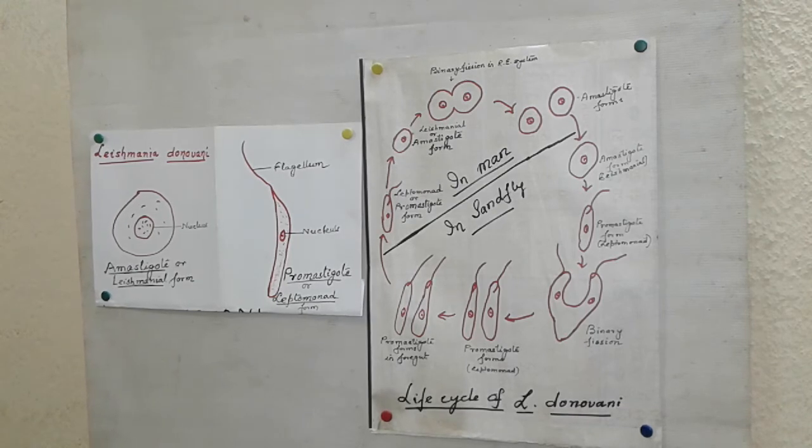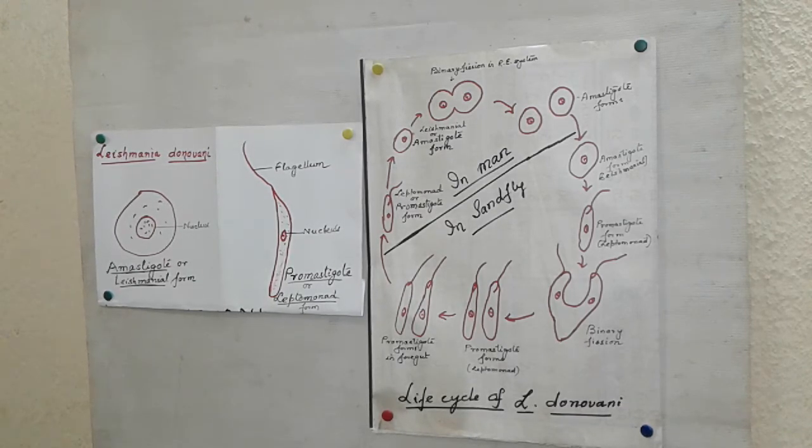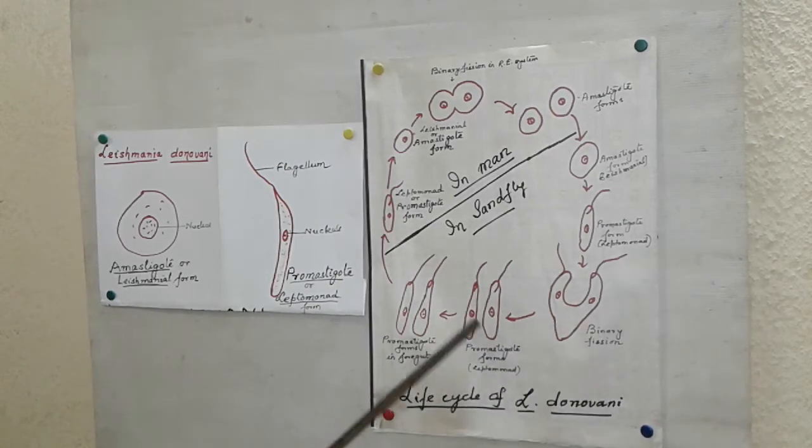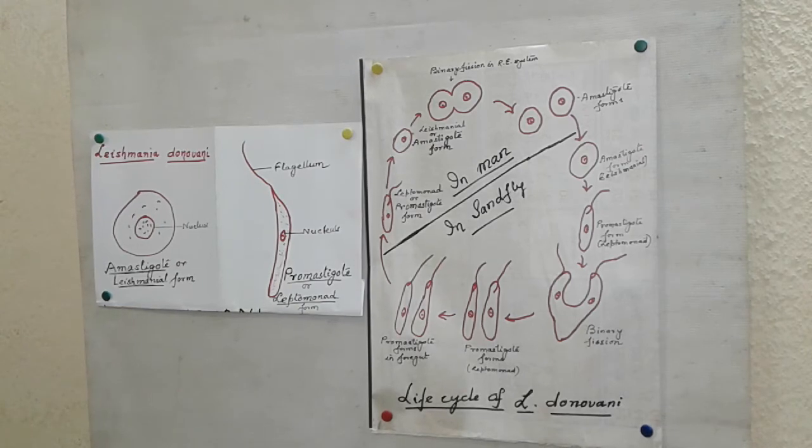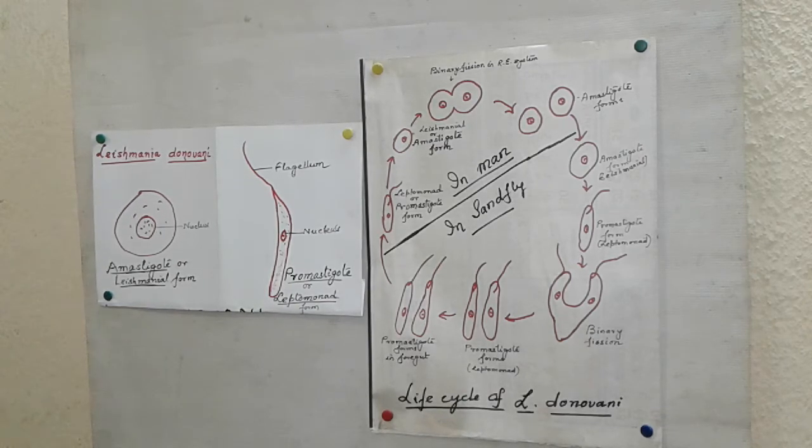First life cycle in the vector. When the female sand fly bites and sucks the blood of an infected person, that is the person suffering from kalajal, the leishmanial forms reach its mid-gut. Changes into leptomonad form and divides rapidly by repeated binary fission. It will divide into two, two parasites at a time. Thus a number of leptomonad forms are formed which reach the buccal cavity of the sand fly. The life cycle of Leishmania donovani is completed in about seven to eight days in sand fly.